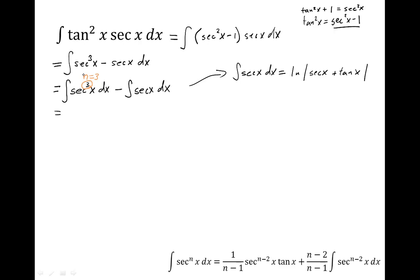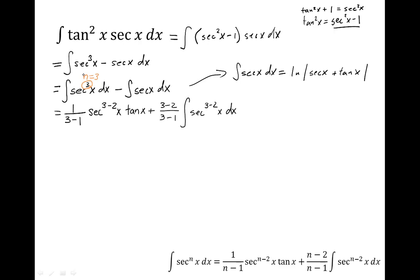So if we follow the formula, the integral of secant cubed x dx equals 1 over 3 minus 1 times secant to the 3 minus 2 power of x times tangent of x, plus the fraction 3 minus 2 over 3 minus 1 times the integral of secant to the 3 minus 2 power of x dx, and then minus the integral of secant x dx.